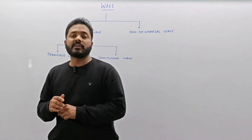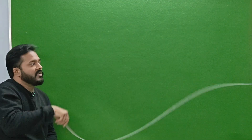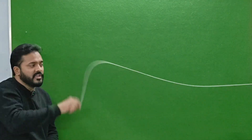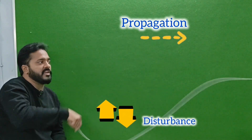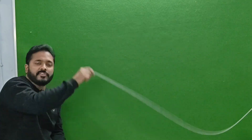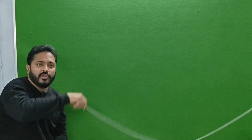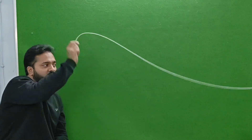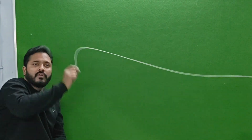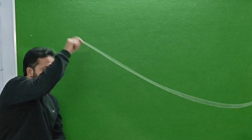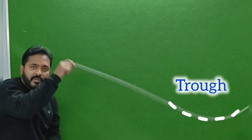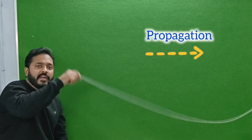Now let us demonstrate how a transverse wave is generated in a medium. We can see that the wave is propagating perpendicular to the direction of disturbance. My hands are moving in the y-direction while the wave is traveling in the x-direction, which is perpendicular to the direction of disturbance. The wave is also making crests and troughs — when my hands move upward, it generates a crest, and when coming down, it generates a trough.